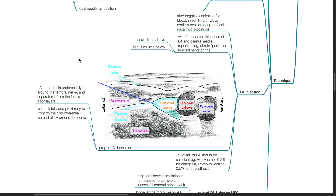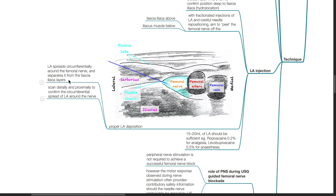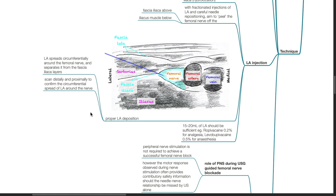LA injection. After a negative aspiration for blood, inject 1 mL of LA to confirm position deep to the fascia iliaca. With fractionated injections of LA and careful needle positioning, aim to peel the femoral nerve off the fascia iliaca above and iliacus muscle below. LA should spread circumferentially around the femoral nerve and separate it from the fascia iliaca layers. Scan distally and proximally to confirm circumferential spread. 15-20 mL of LA should be sufficient.